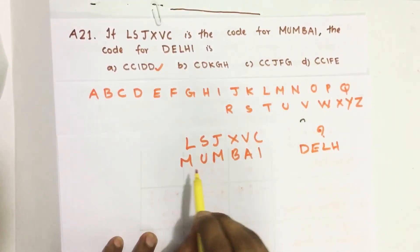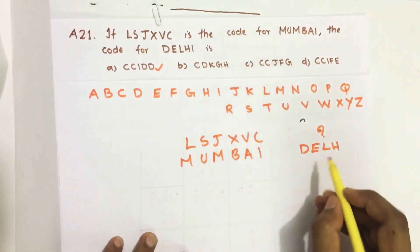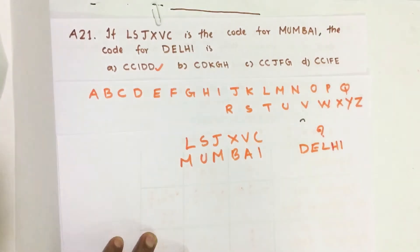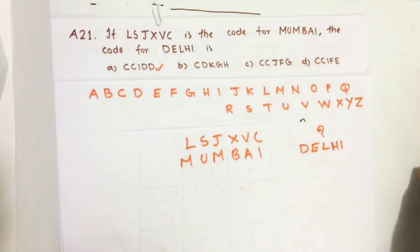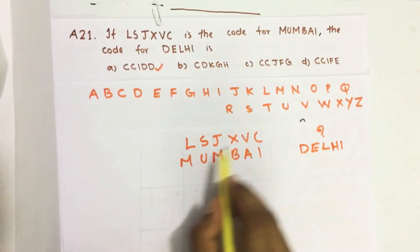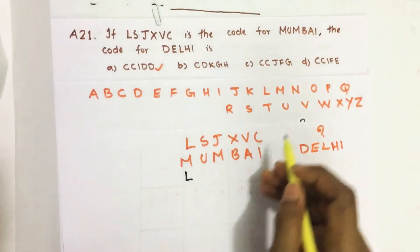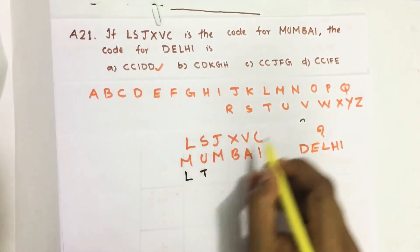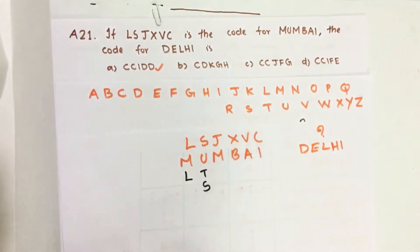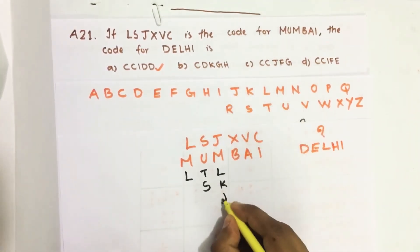To do this problem easily, I have already written the alphabet here. We need to find the relationship between Mumbai and its code, and then apply the same relationship to find the code for Delhi. Just before M in the English alphabet it is L. Just before U it is T, and before T it is S. So just before M it is L, then K, then J.